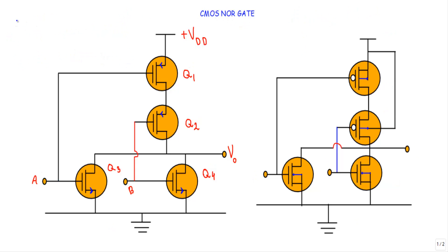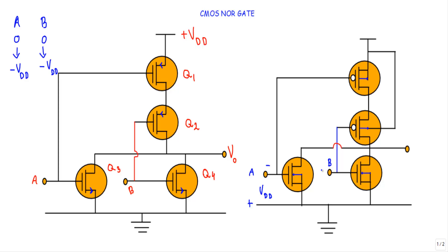Now I will show you the logical operation of the CMOS NOR gate. Consider the first case when A is at logic 0 and B is at logic 0. A at logic 0 means we apply minus VDD at the gate terminal — a voltage source VDD with its negative terminal at input A and positive terminal at ground. Similarly, B at logic 0 means another VDD source with its negative terminal at B and positive terminal at ground.